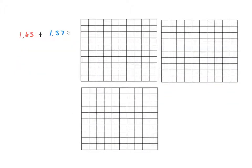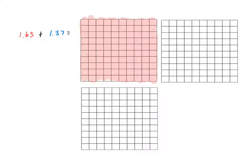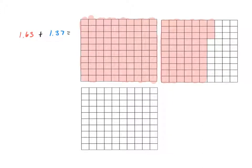In this example I have one and sixty-three hundredths plus one and thirty-seven hundredths. I'm going to start by modeling my first decimal. I'll quickly shade in one whole — this entire square is going to be shaded in. It's more important to be careful when you get to the small hundredths amounts. So there's one whole. I want six tenths: one, two, three, four, five, six tenths. Now I need three hundredths: one, two, three. I've modeled my first addend.